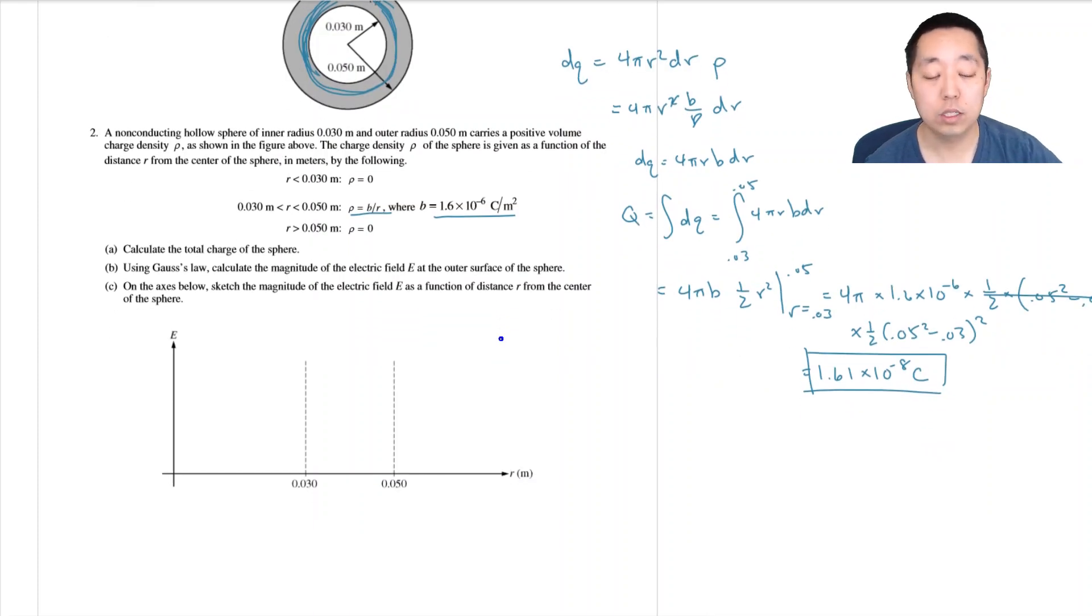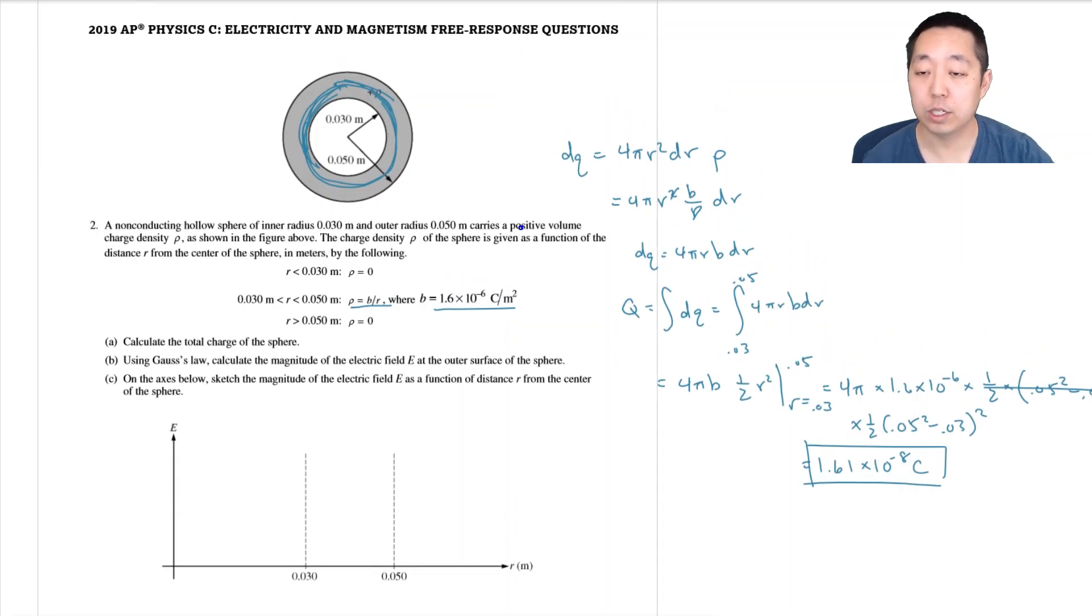So using Gauss's law, calculate the magnitude of the electric field E on the outer surface of the sphere. So I'm going to create a Gaussian surface on the outer surface of the sphere here. It's a shell. You've got to think of it as three-dimensional because this is a sphere. So I think of it as a shell. And Gauss's law is the integral, the surface integral E dot dA is equal to the amount of charge enclosed over epsilon naught.